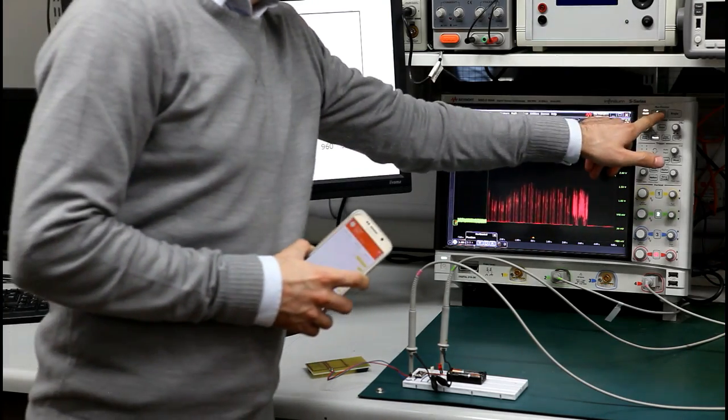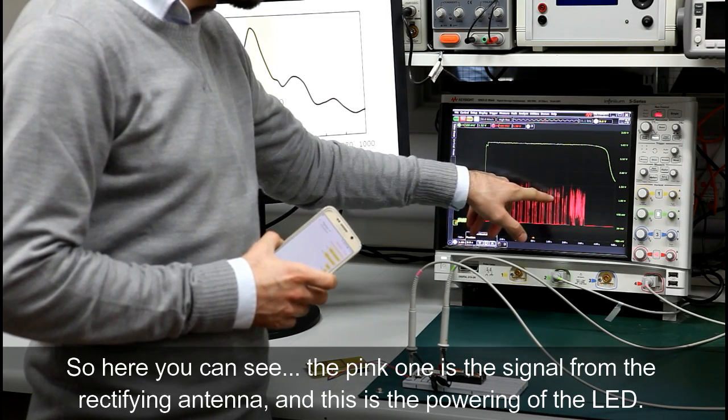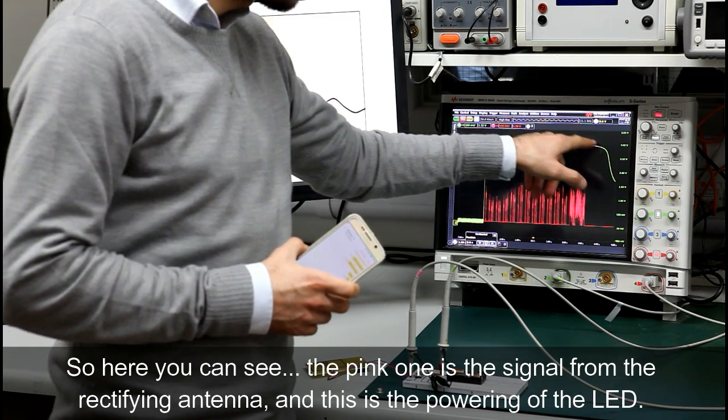So here you can see the pink one is the signal from the rectifier antenna and this is the powering of the LED.